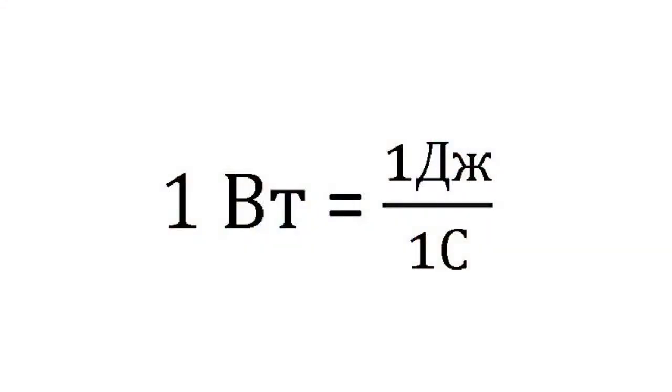Watt is an SI unit of power. It was named after its inventor James Watt, the creator of the steam engine. Since power is work per unit of time, one watt can be expressed in terms of joules and seconds: one watt equals one joule divided by one second.